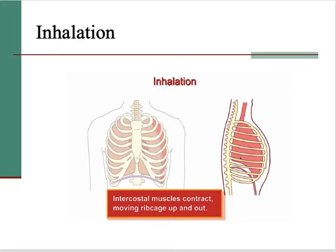When we inhale, the diaphragm and the intercostal muscles are both involved in contracting. When the intercostal muscles contract, they force the rib cage to go up and out. When the diaphragm contracts, it moves downwards. All of those changes bring about a change in air pressure, and that is what causes us to draw air into our thoracic cavity.